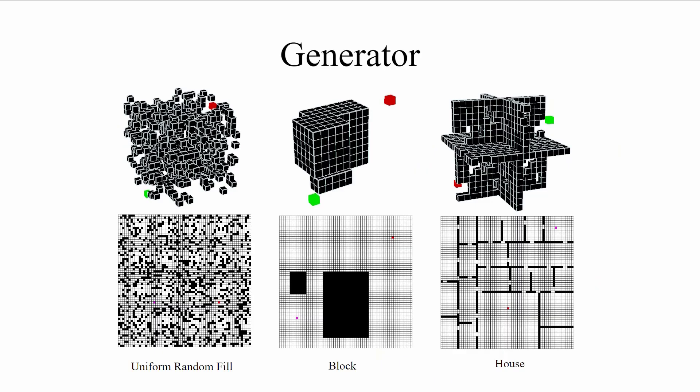Three types of maps can be generated inside PathBench, including uniform random field maps, block maps, and house maps in both 2D and 3D configurations.